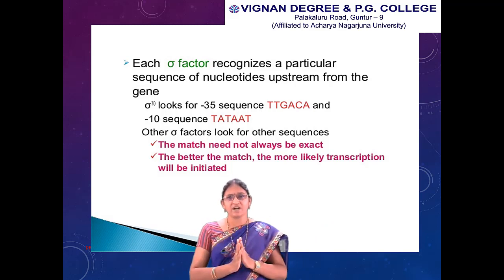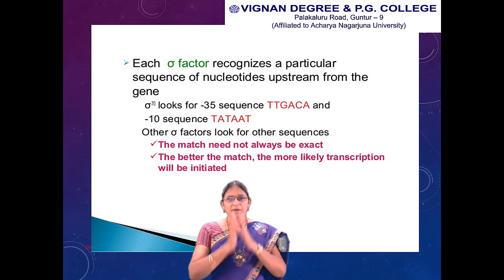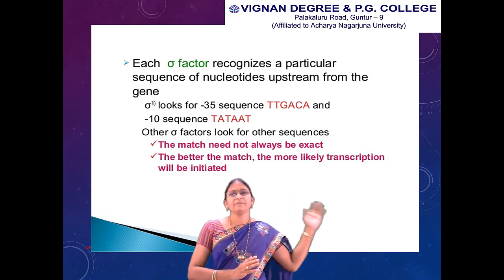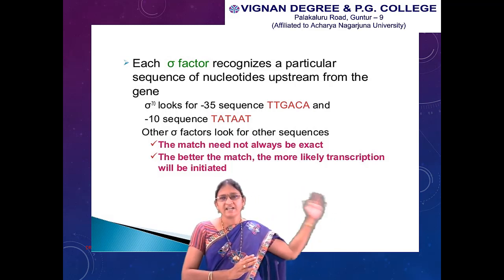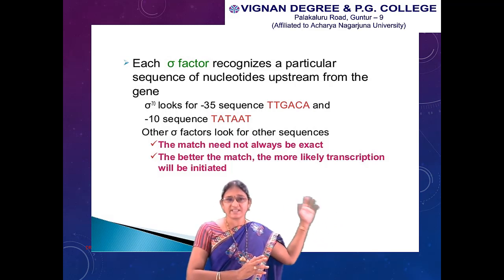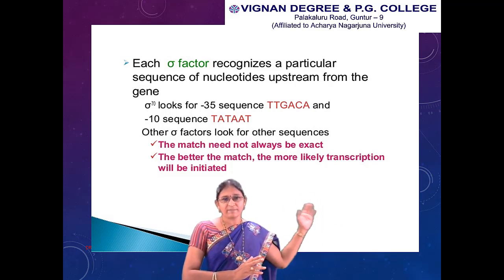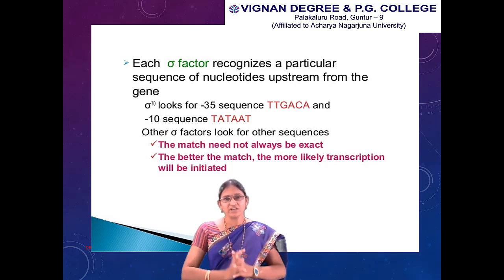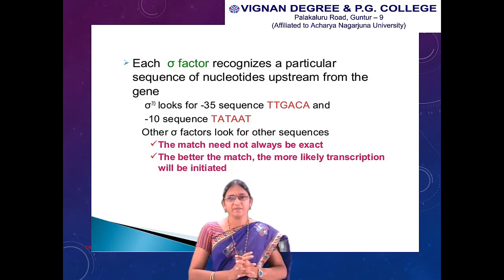Upstream means the region above the transcription start site, while downstream is the region below. The promoter is present in the upstream region of the transcription site. Sigma 70 looks for exactly the minus 35 sequence — TTGACA — and the minus 10 sequence — the TATA box. So two sequences recognized by sigma 70 are: the TATA box for minus 10 and the TTGACA sequence for minus 35. Other sigma factors look for different sequences, and the match will not always be exact — the better the match, the more likely transcription will be initiated.